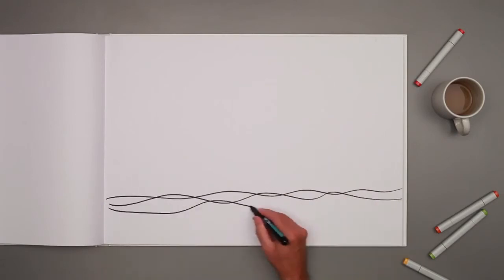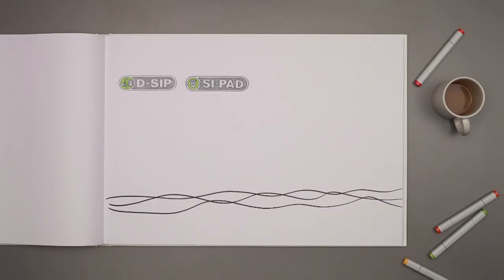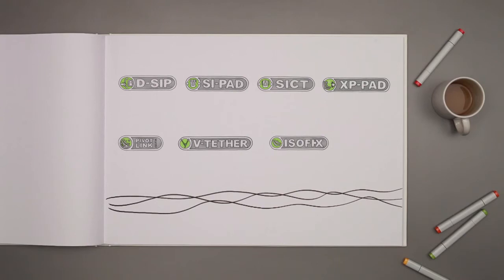But our story doesn't end there. Other Britax Roma safety innovations such as DSIP, SI-PAD, SICT and XP-PAD, PivotLink and TopTether mean that when used with our famous ISOFIX, your child is as safe and as happy as they can be.